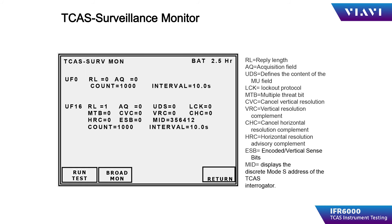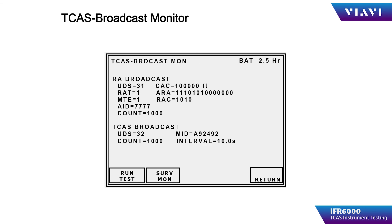Pressing the MON soft key takes the operator to the interrogation monitor screen. This will display the types and quantity of the interrogations from the TCAS being tested. While in the resolution advisory cycle, the TCAS will broadcast resolution advisory status messages, which can be monitored on the TCAS broadcast monitor page.